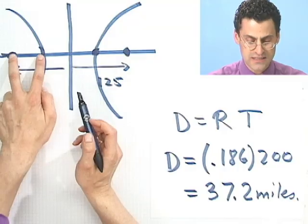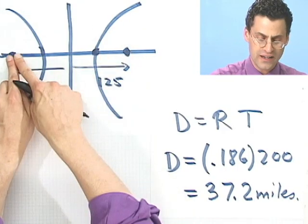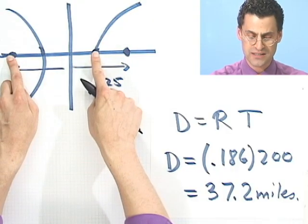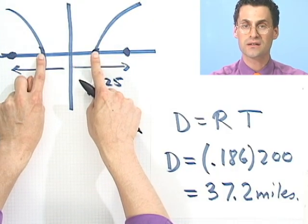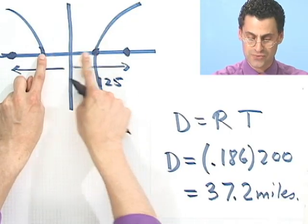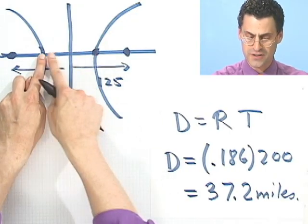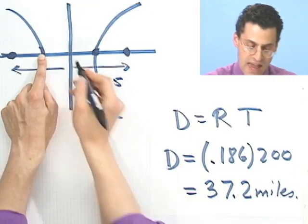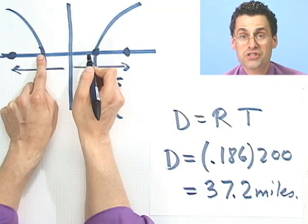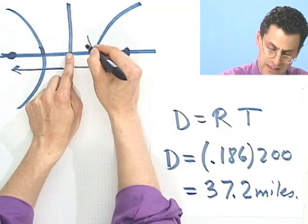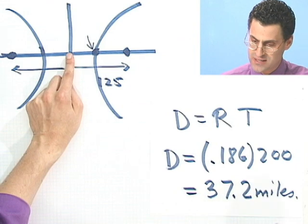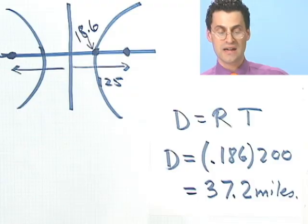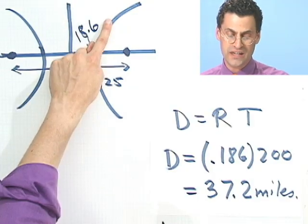This distance here is equal to that distance there. So if I take this whole distance and subtract that, it's the same as taking this whole distance and subtracting this. This transversal distance must be 37.2 miles. This vertex is at half of 37.2, which is 18.6 miles.